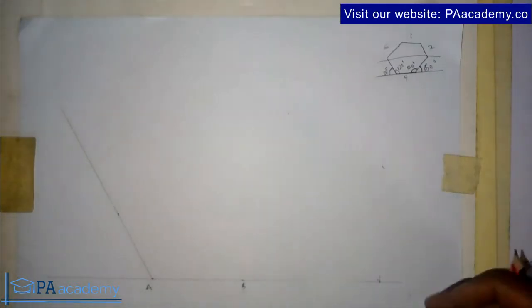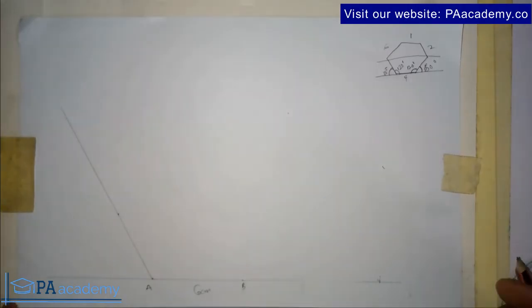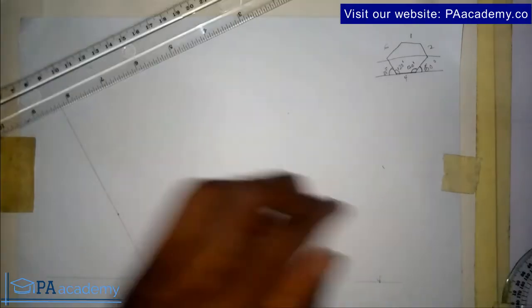Alright, so let's continue. Now I'm using length of 6 centimeters, that's 60 millimeters. So I bring back my protractor.